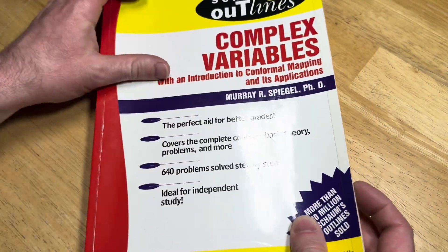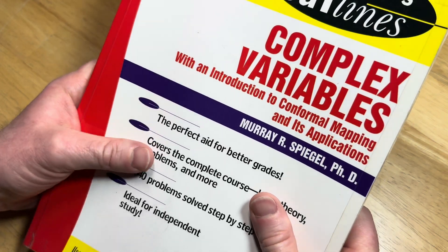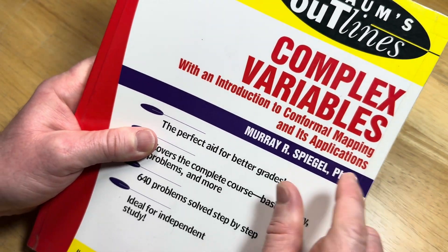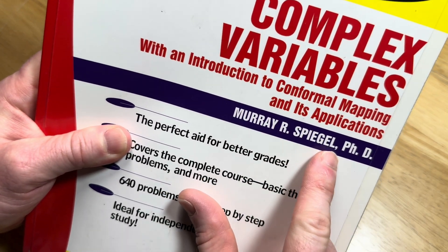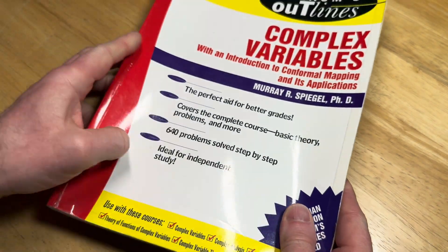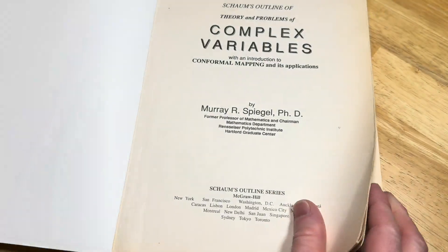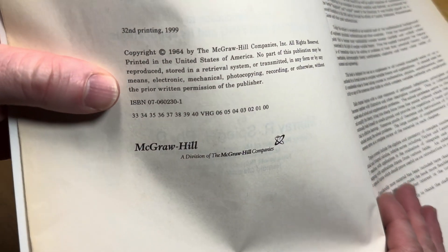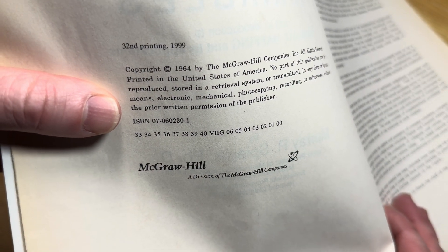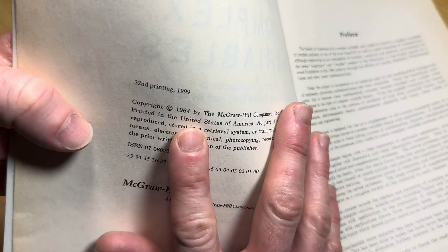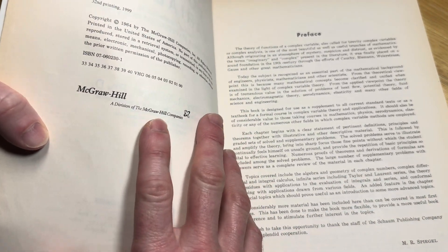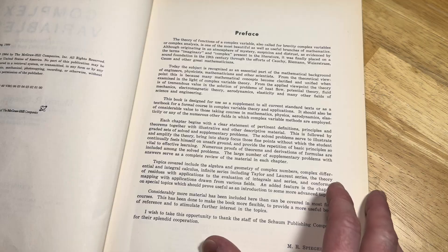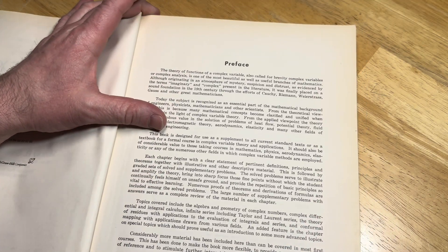The book is called Complex Variables with an Introduction to Conformal Mapping and its Applications, written by Murray R. Spiegel, Ph.D. This is an older edition, the 32nd printing from 1989. The original printing was in 1964 by McGraw-Hill, so it's been reprinted multiple times.